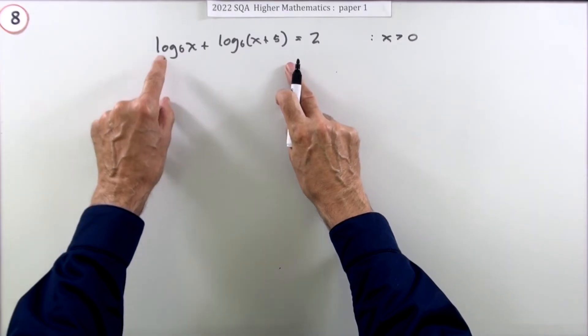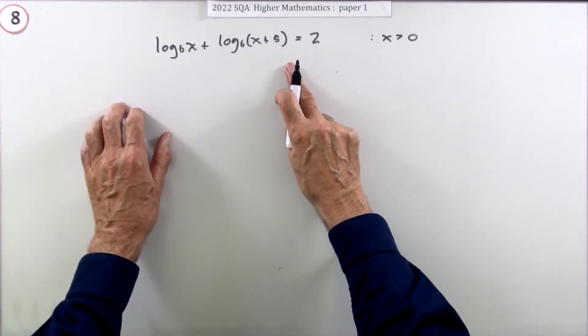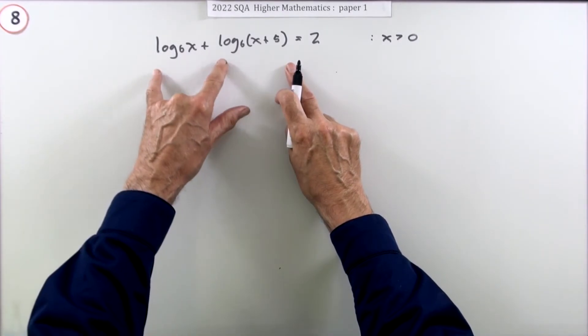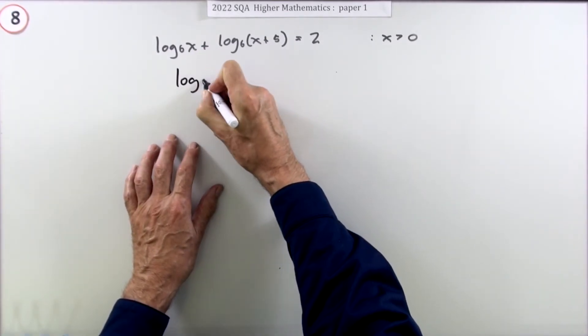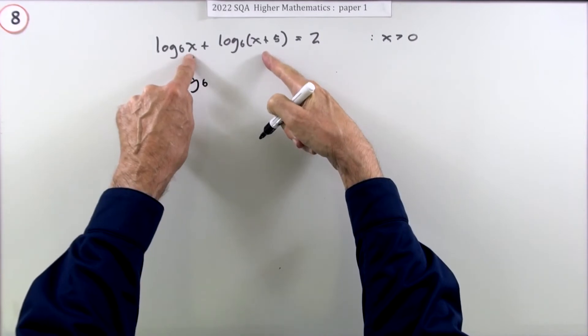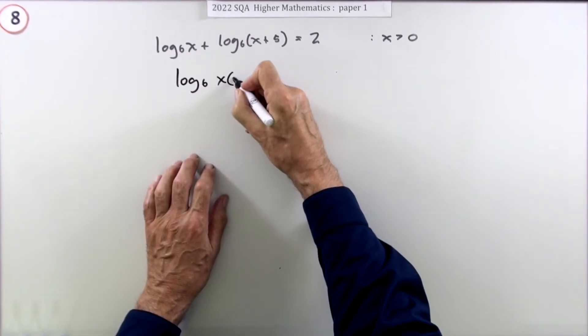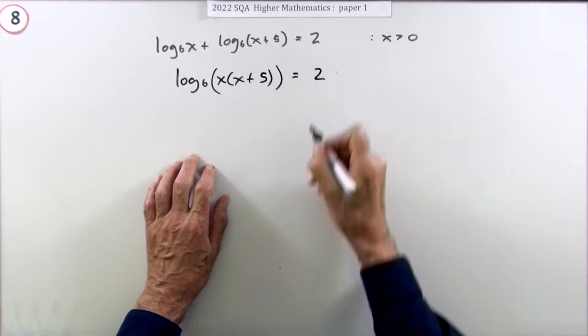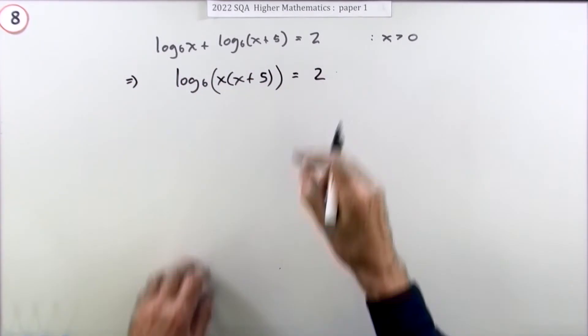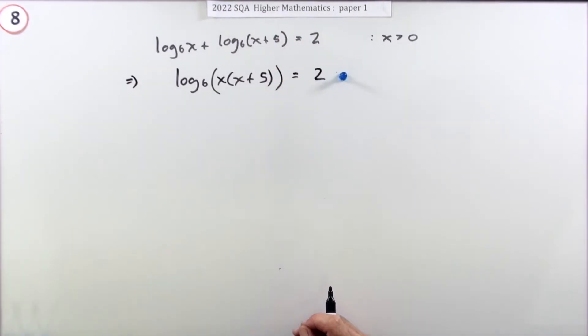Well, the first step is going to be: simplify this. You want rid of those logarithms, so use that rule that says if you're adding them, they can combine into a single logarithm of the product. So log of x times (x+5), maybe we'll just pop that in another bracket. Now doing that, using that law of logarithms, gets you the first mark.